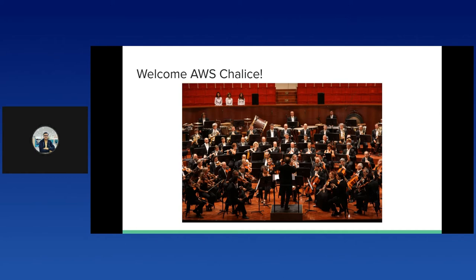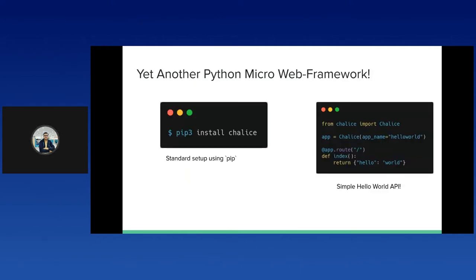With Chalice, the scaling, packaging, and deployment are all done for you almost instantaneously. If you work with Flask or FastAPI, you'll find Chalice quite similar. Chalice runs completely on AWS resources and offers single-click deployment. It provides integrated functionality with most AWS toolings like S3 storage, Simple Queue Service, API Gateways, and more. Chalice is completely open source and currently being used by over 1,000 repositories on GitHub.